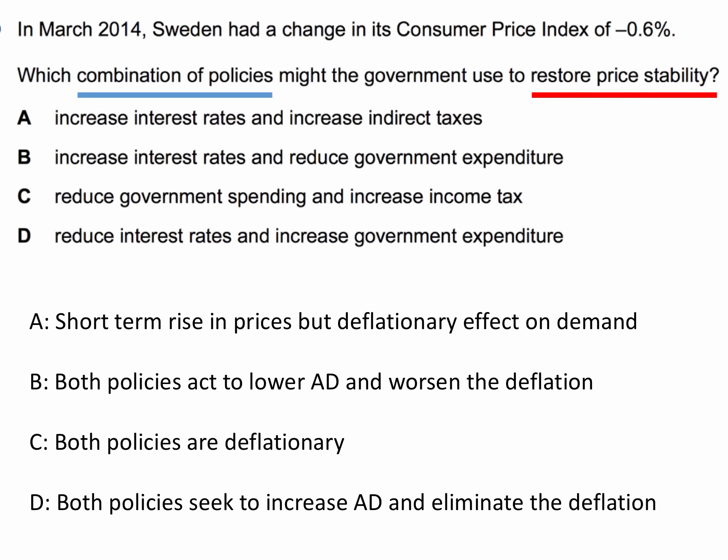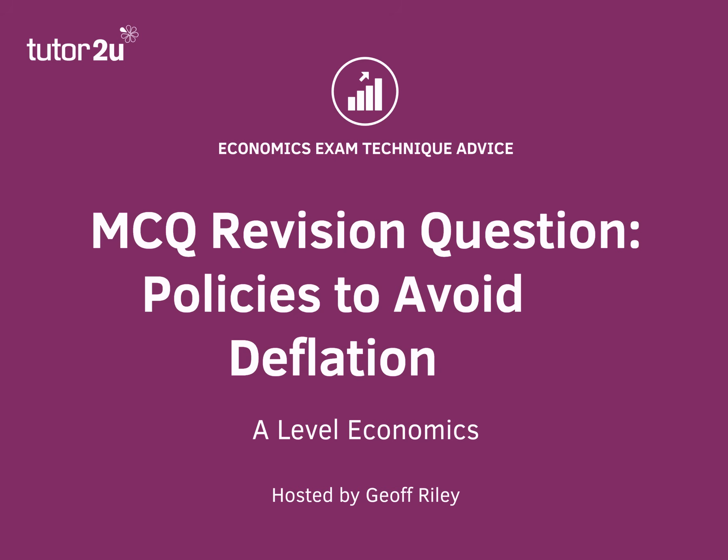D is the right answer. Cutting interest rates — perhaps in the case of Sweden, negative interest rates — and increasing government spending as a fiscal stimulus: both policies seek to increase aggregate demand in the circular flow, helping over time to increase the price level and eliminate the situation of deflation. So D is the right answer to this particular question.